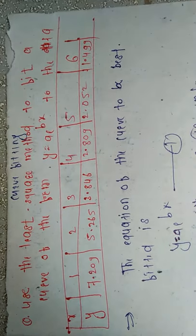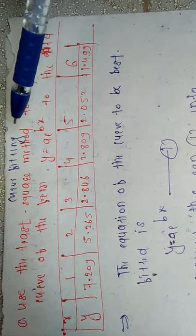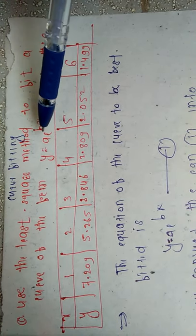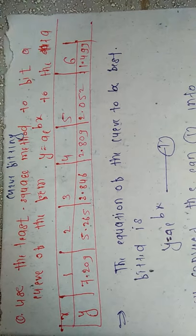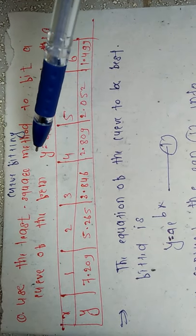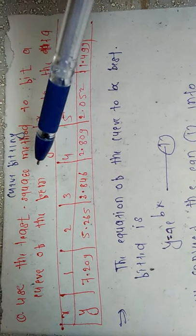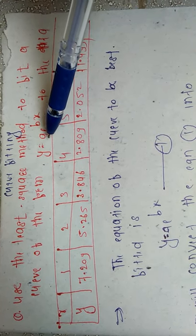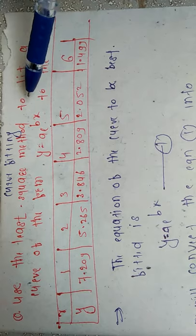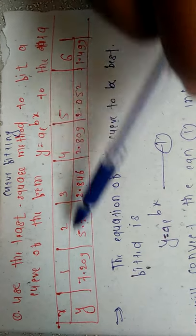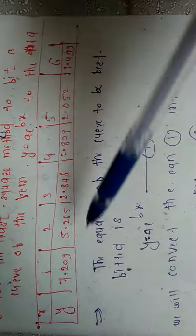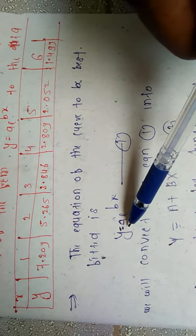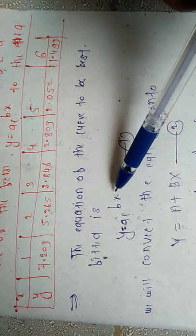Good morning friends. We are studying curve fitting. In the last lecture we already studied one type of curve, that is y is equal to a plus bx — that curve is a straight line. In this lecture we will see a curve of the form y is equal to a times e to the power bx. This is the given data with values of x and y. So the given curve is y is equal to a e to the power bx.